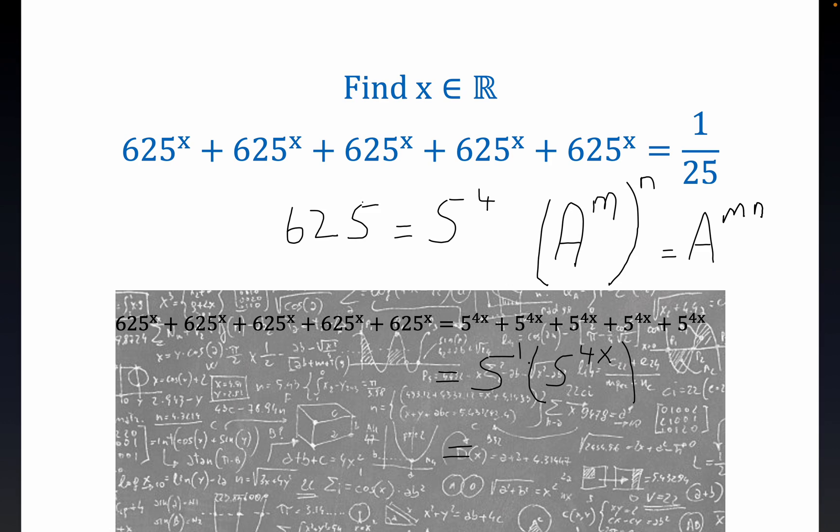There's one copy of 5 here, there's 4x copies of 5 right here. So you have 5 raised to the 4x plus 1. That's the value of the exponent when you sum the exponent 4x with the exponent 1.